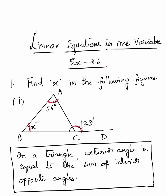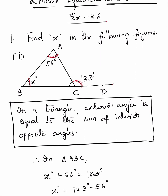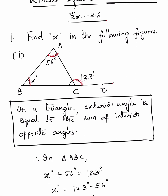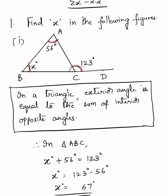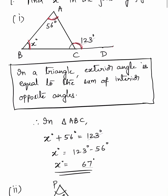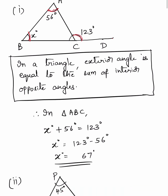Linear equations in one variable, exercise 2.2: Find X in the following figures. Given triangle ABC, one exterior angle and two opposite interior angles are given. In a triangle, an exterior angle is always equal to the sum of interior opposite angles. So in triangle ABC, X plus 56 equals 123, therefore X equals 123 minus 56, which is 67 degrees.